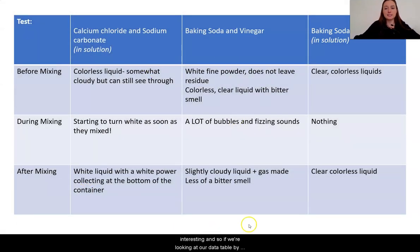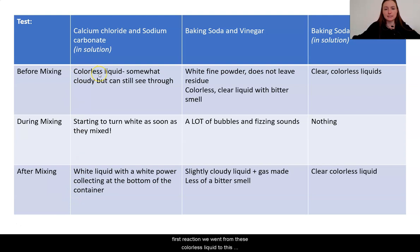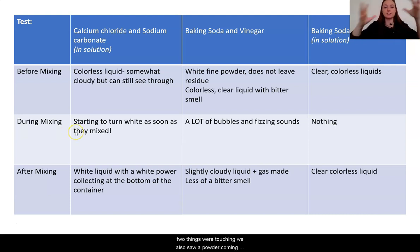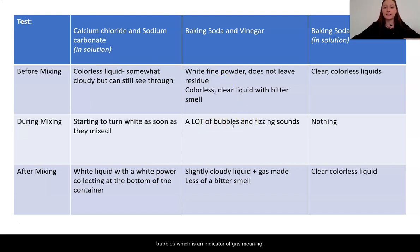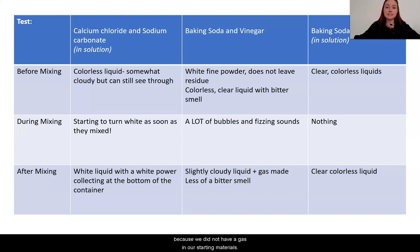Looking at our data table, it really seems like something new was made in our first two reactions. In the first reaction, we went from colorless liquids to the liquid turning almost a milky white color as soon as the two things were touching. We also saw a powder coming out of the substance, which we didn't have at the start. In our second reaction, we saw bubbles, which is an indicator of gas, meaning something completely new was made because we did not have a gas in our starting materials.